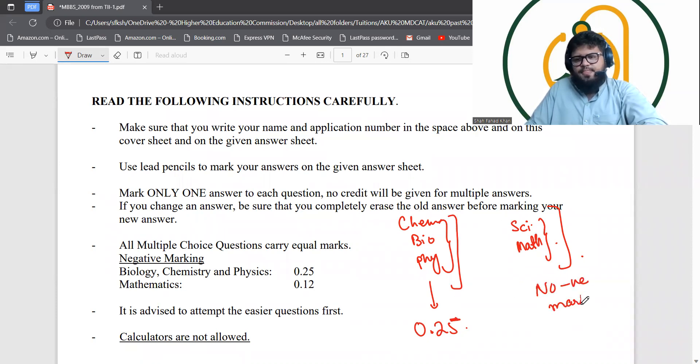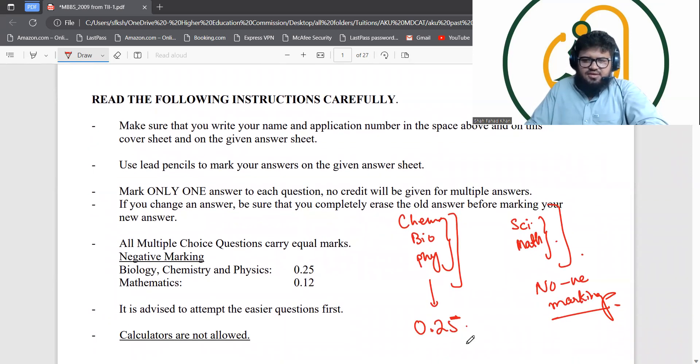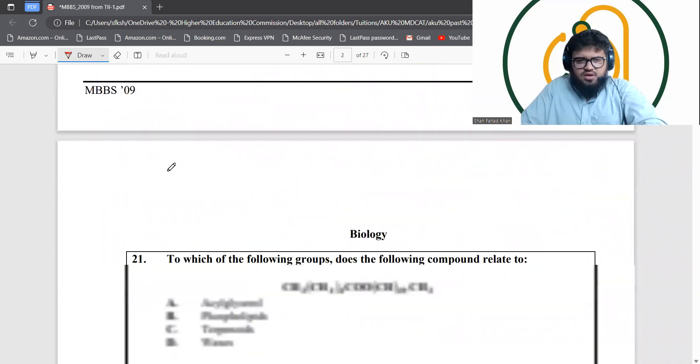Now moving on to the major paper, the pattern is similar. This is the example pattern: 20 MCQs for all the sections in here, making it a total of 100 MCQs for the 2023 AKU exam paper. This is done.